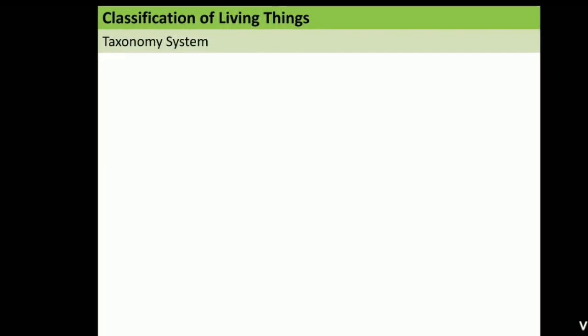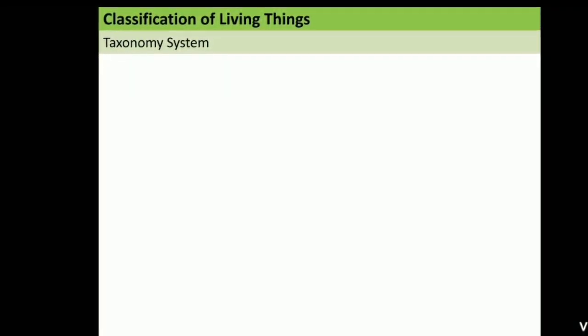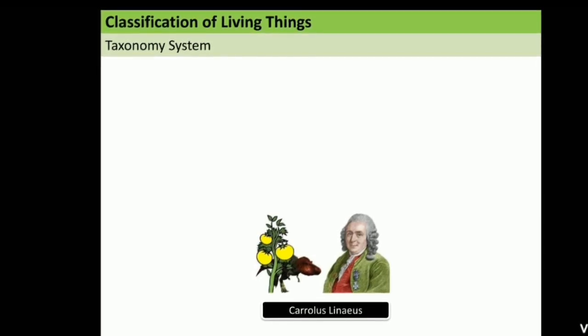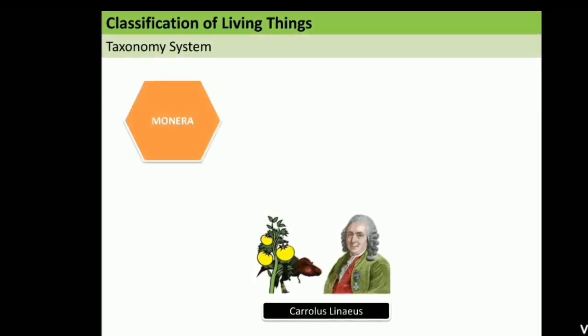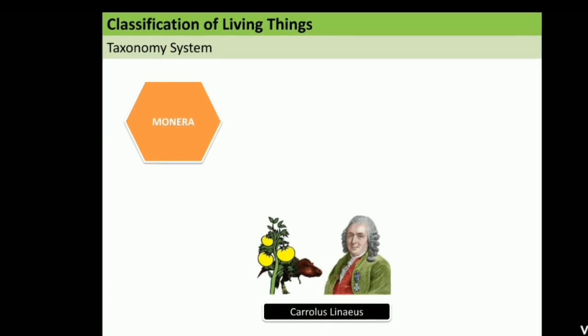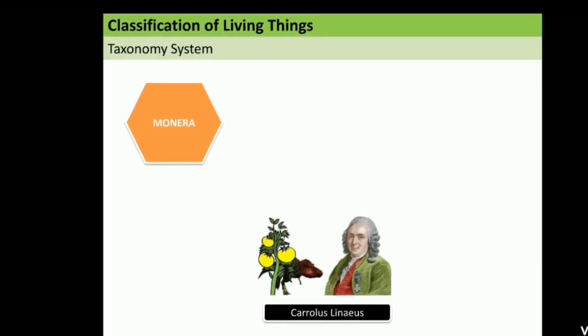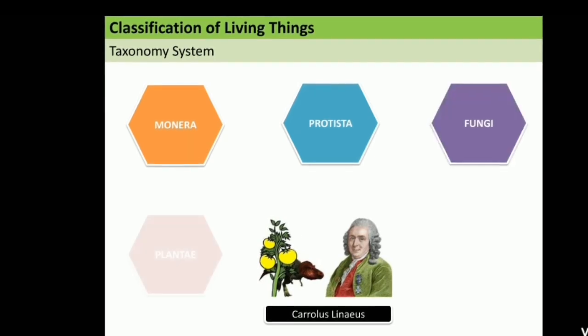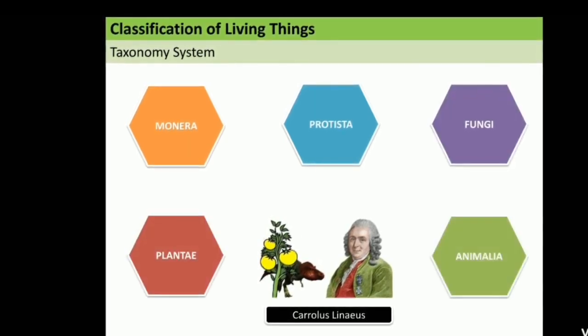Now, I will talk deeply about taxonomy system. Actually, taxonomy system is found by Carlos Linnaeus. He divides the organisms in the world become five kingdoms. Start from Monera, Protista, Fungi, Plantae, and Animalia.